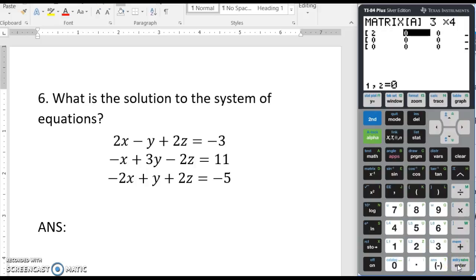The second one is a negative y, which means that we've got negative 1 as our coefficient. We hit enter, and we've got 2, and the last number is the solution, the constant value, negative 3.